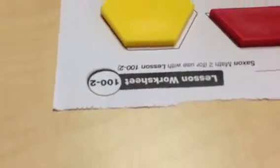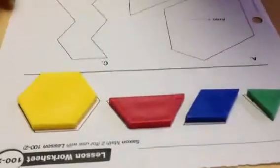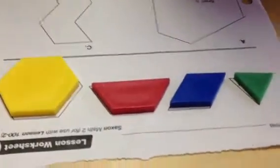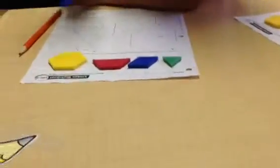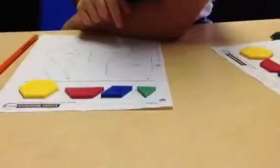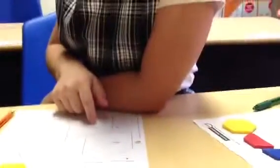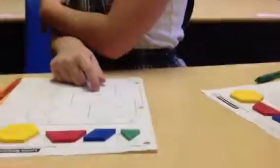Now we'll use the pattern blocks to find the area of each design at the bottom of the paper. Which design do you think has the largest area? Jack? This one. Okay. Which design do you think has the smallest area, Allison? B?